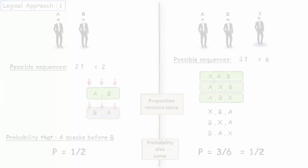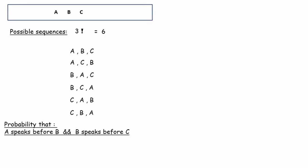Now, let's consider only three persons A, B and C. Possible sequences 3 factorial. That's 6. We have to find the probability that A speaks before B and B speaks before C. There is only one such valid case. So, the probability is 1 by 6.